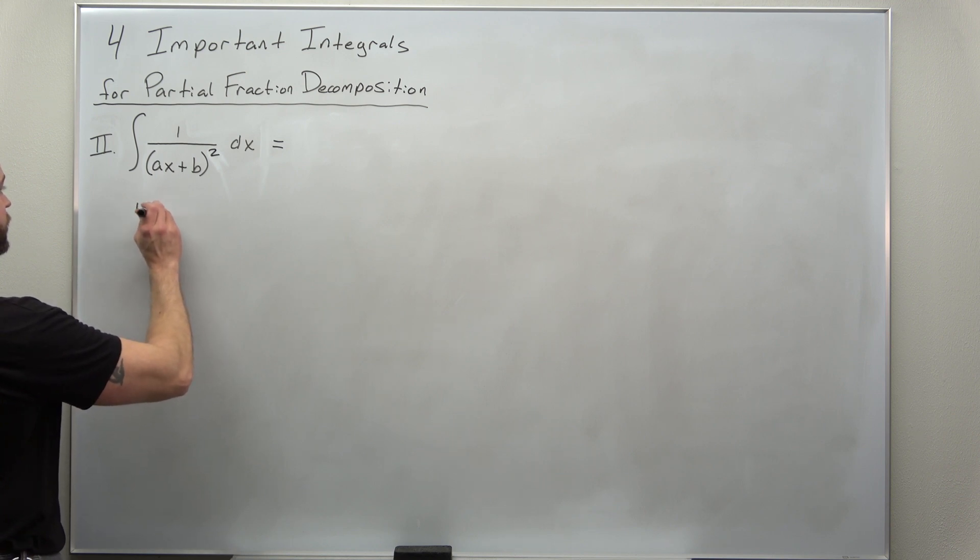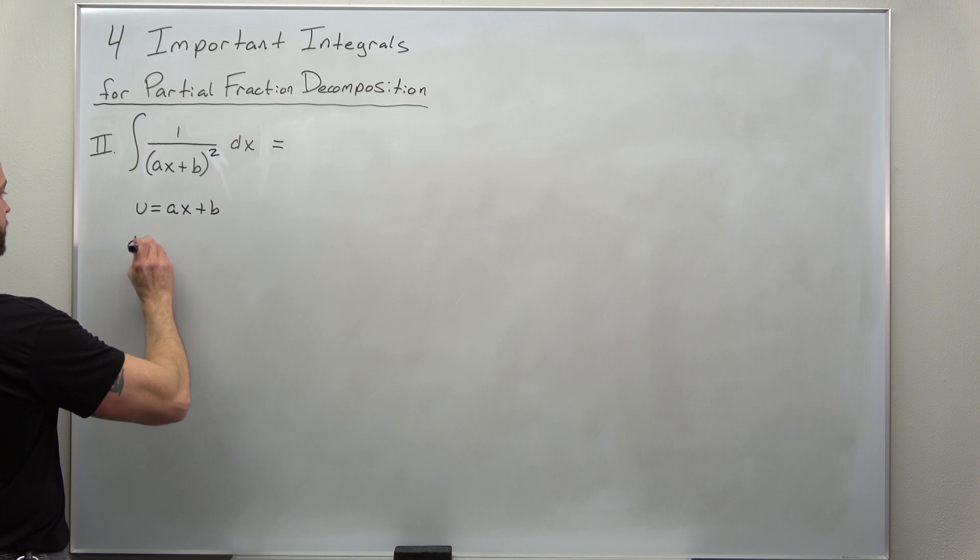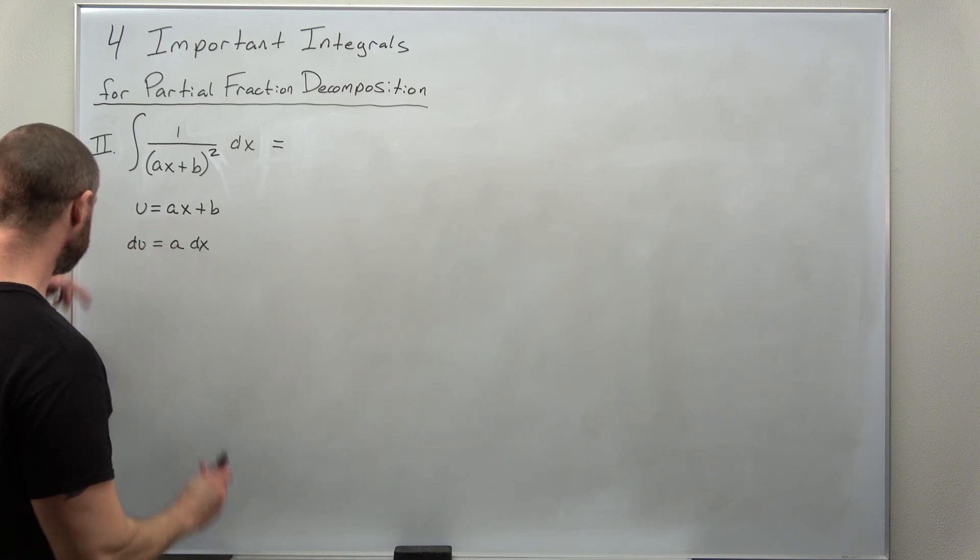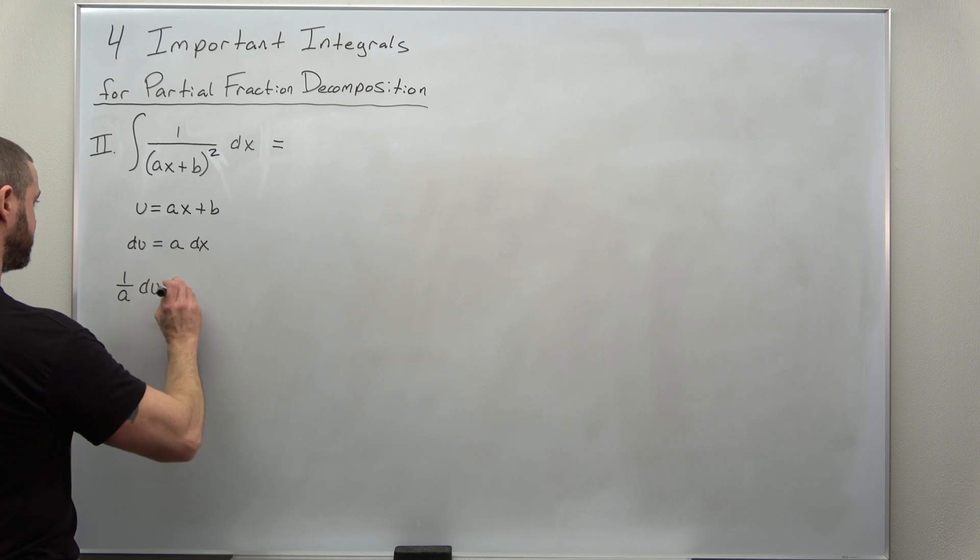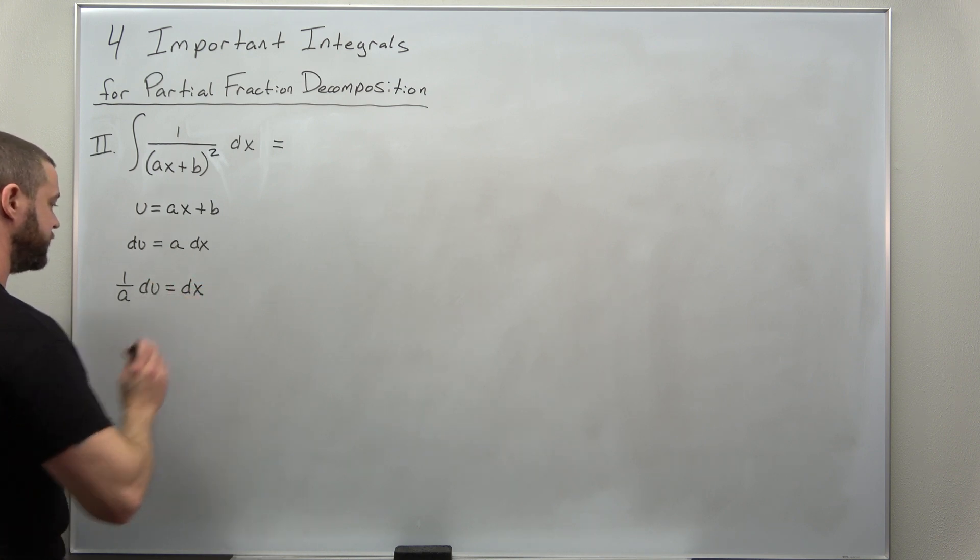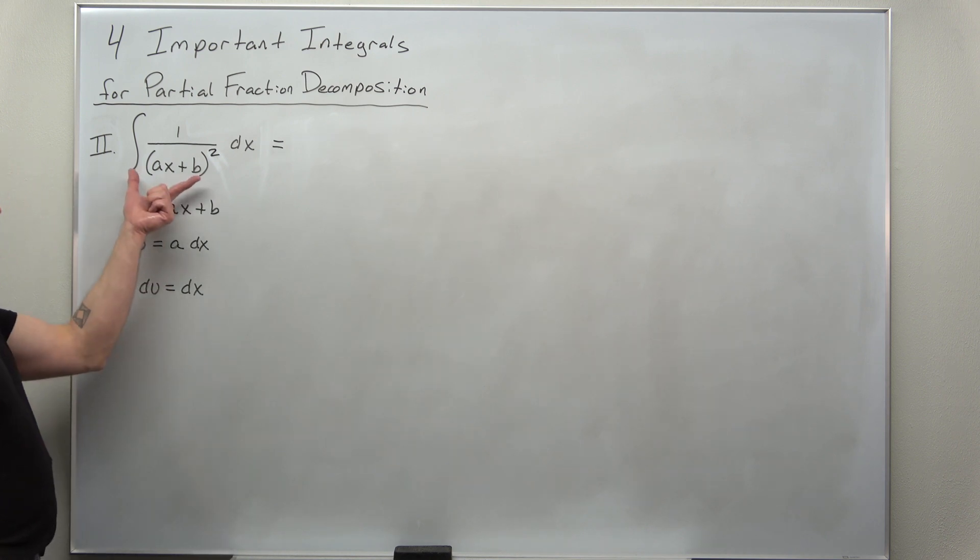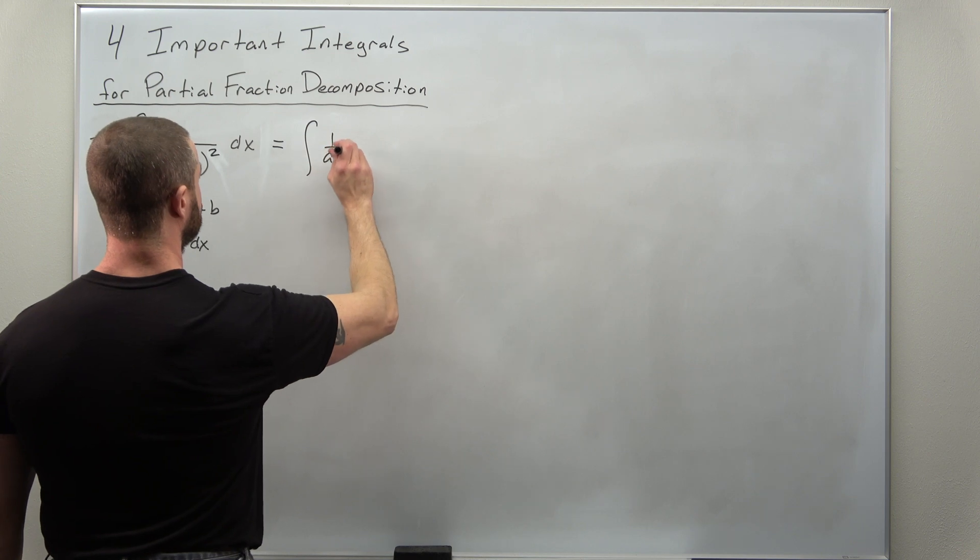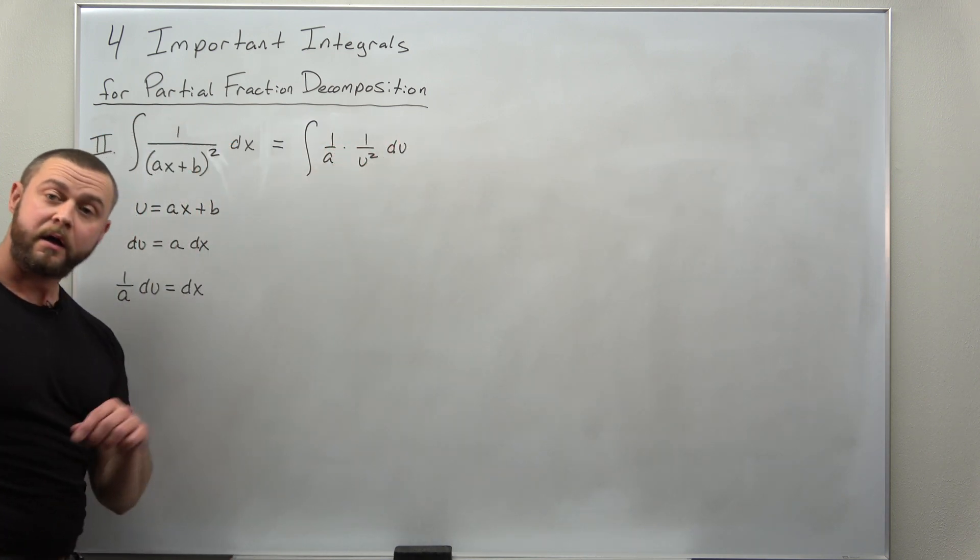And evaluate this integral using our u substitution. Same u substitution, u = ax plus b. Same differential du = a dx. And same trick of dividing the a over to get (1/a) du. And we also convert it, but now we get one over u squared du.